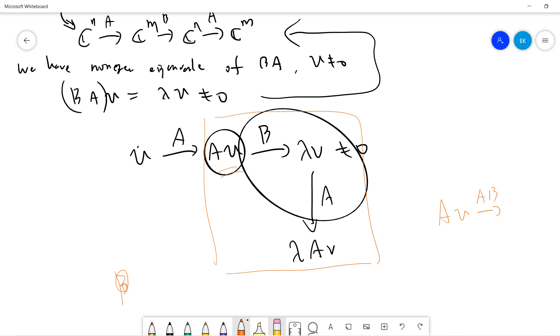Act on AB, so act on AB means that B acts first and A, so it will be λ·AV.